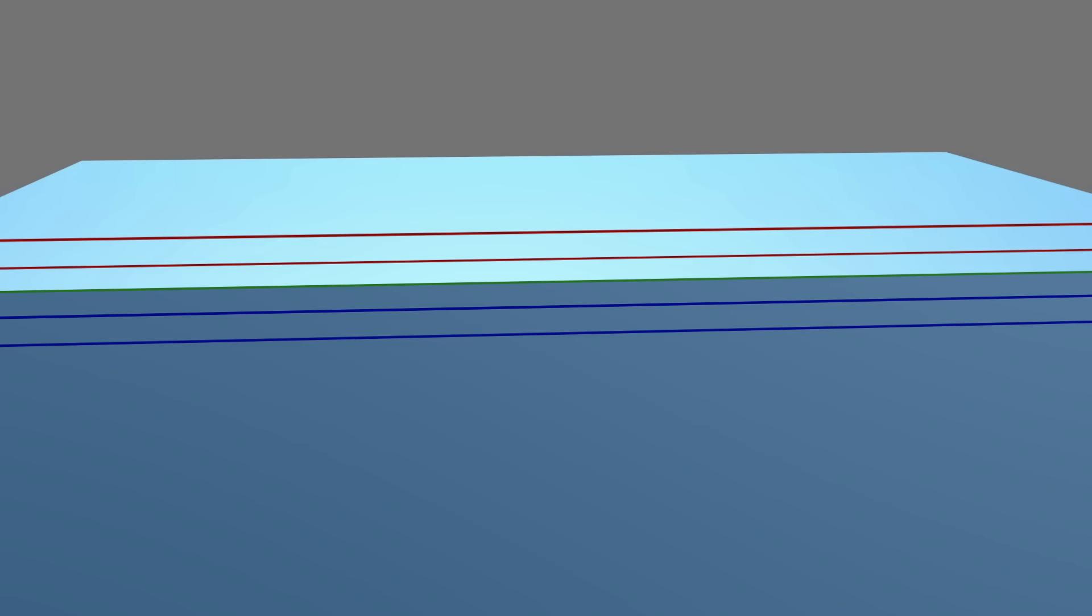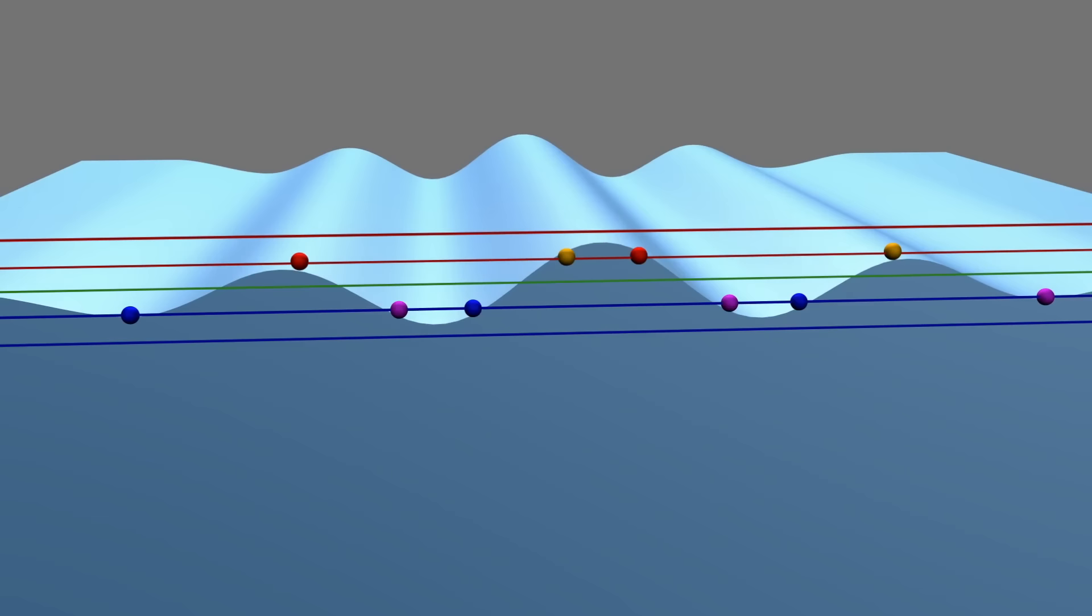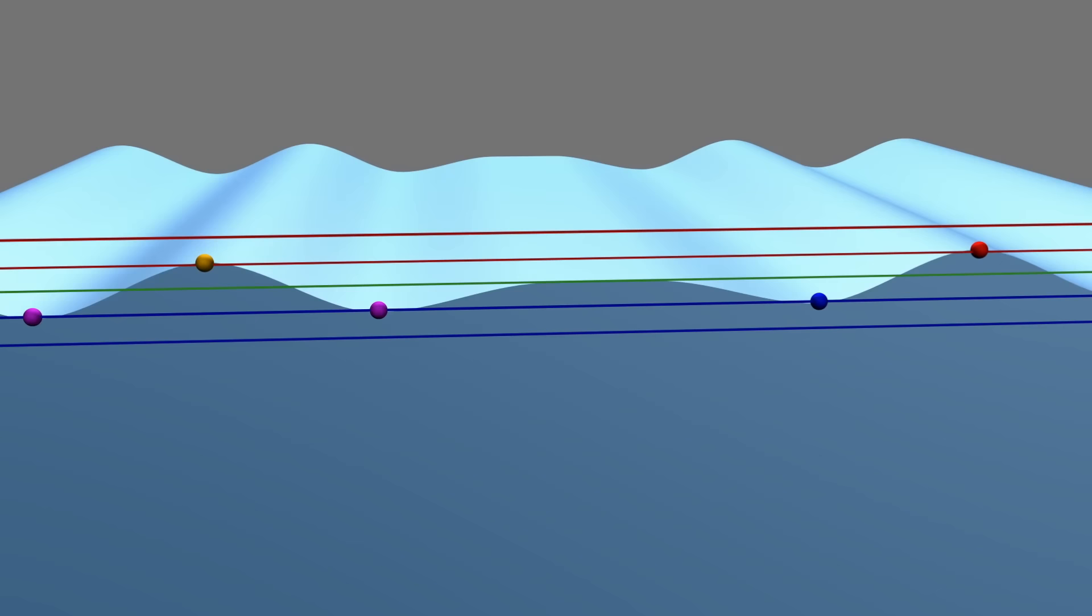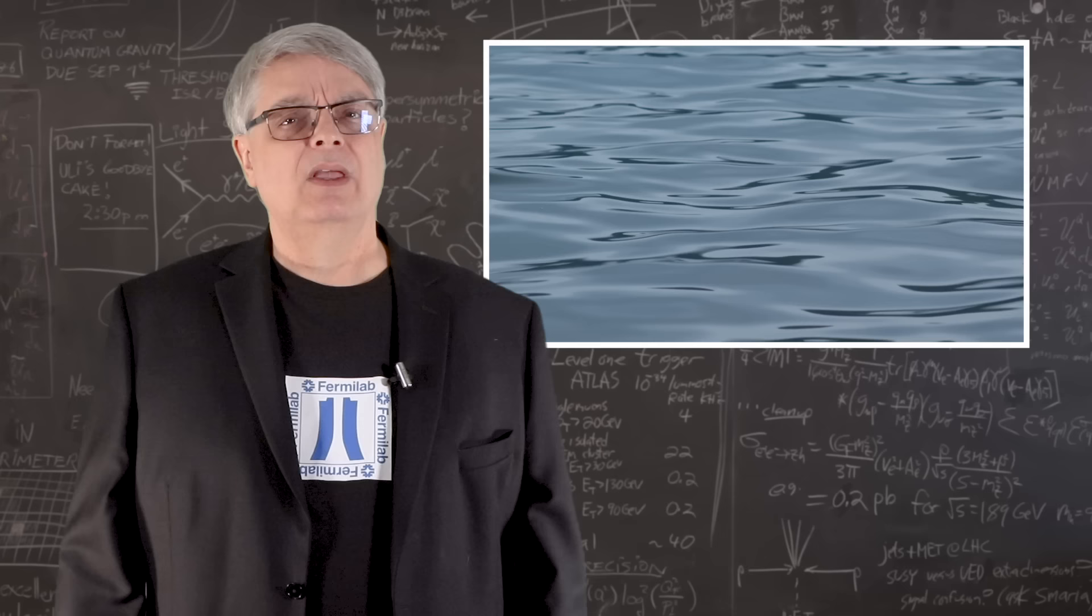Two waves, when they encounter one another, can interfere, which means add together, with the result being an even bigger wave. Or, if the two waves encounter each other with a peak of one wave encountering the trough of another wave, the two waves can cancel each other out. Waves can occur in many media. Most familiarly, they can occur in water. And if you have two water waves, they can interfere with one another, either enhancing each other or canceling each other out.